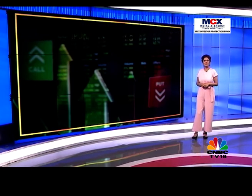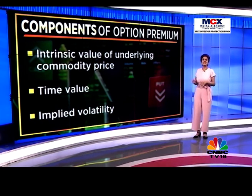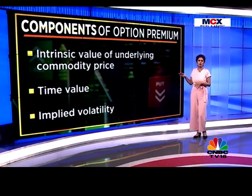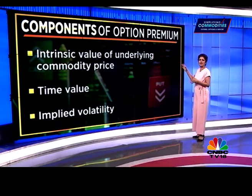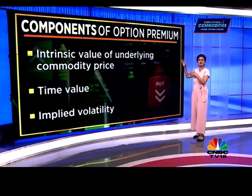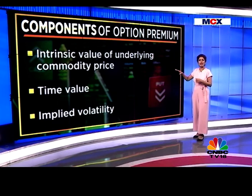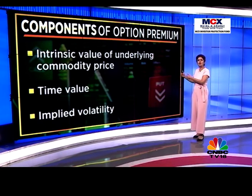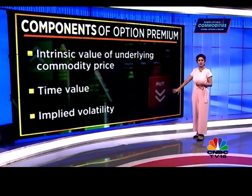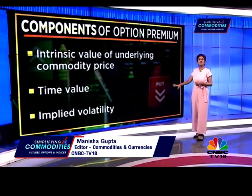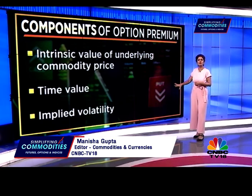Components of an option premium include its intrinsic value, which represents the difference between the underlying security price and the strike price of the contract. The time value, which as the option nears its expiration date, will edge closer and closer to zero. And the implied volatility, which is derived from the option price model.